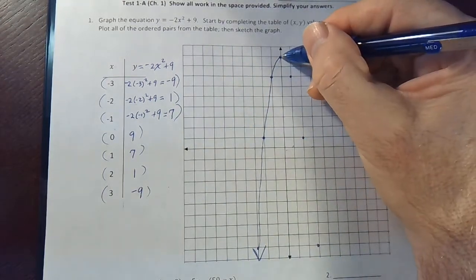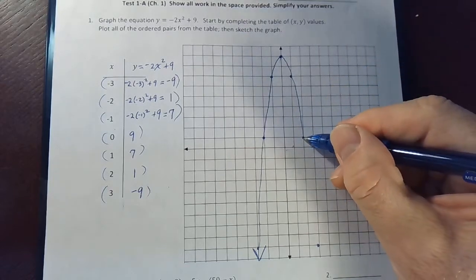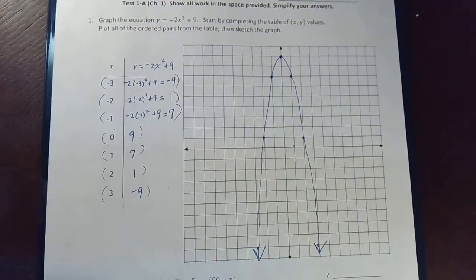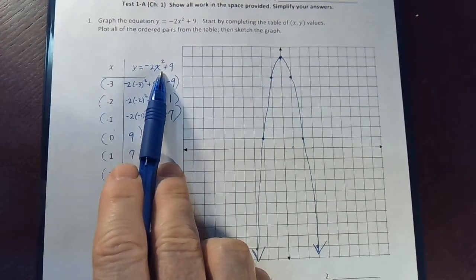All right, and then this will actually be a mirror image on this side. Okay, that's the graph of y equals negative 2x squared plus 9.